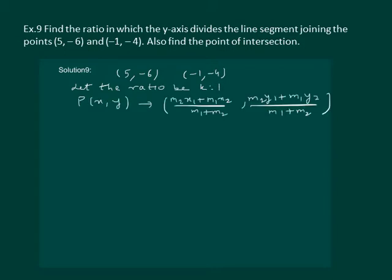Let us find the coordinates of point P using the section formula. We get the x-coordinate as (-k + 5) / (k + 1) and the y-coordinate as (-4k - 6) / (k + 1). These are the coordinates of the point which divides the given two points in the ratio k:1.